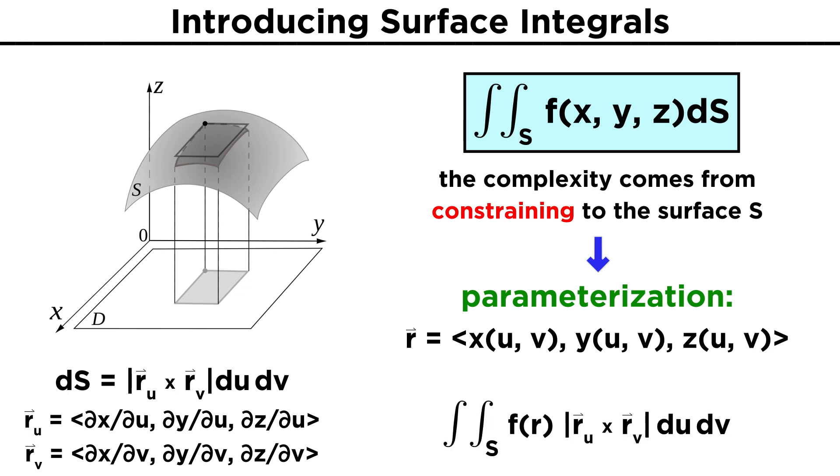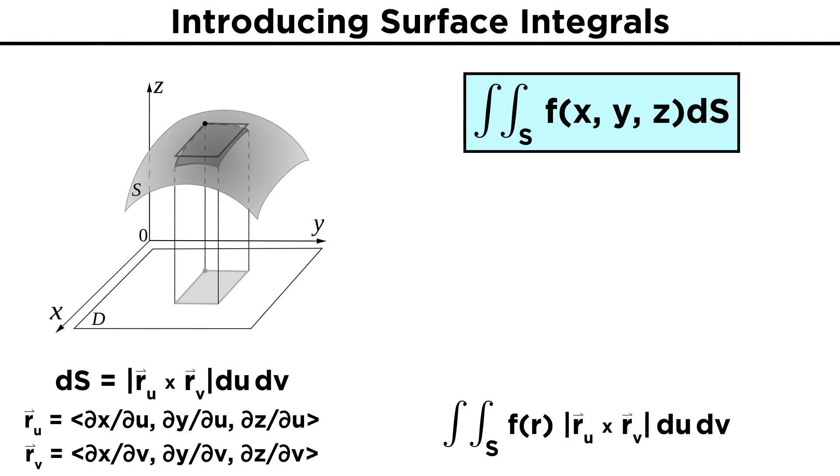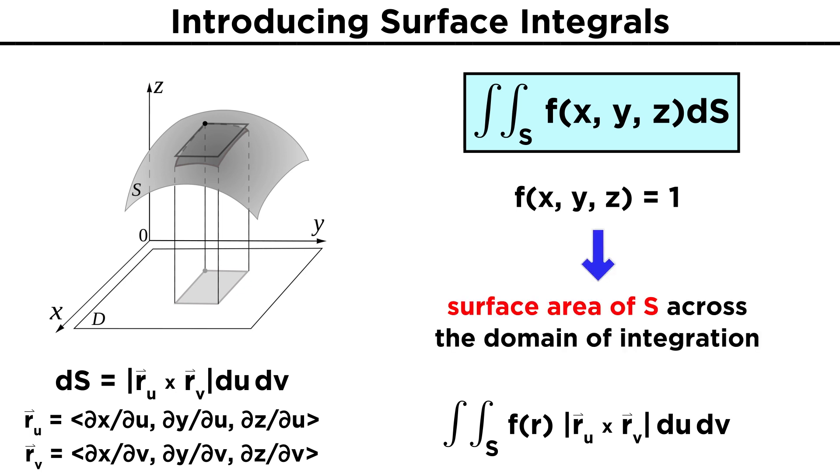So our surface integral of F over the surface S becomes the double integral of F of R times the magnitude of R U cross R V, dU dV. The interpretation of these surface integrals is a bit more abstract, but if looking at the function F equals one, then the integral gives back the surface area of S across the domain of the integration.